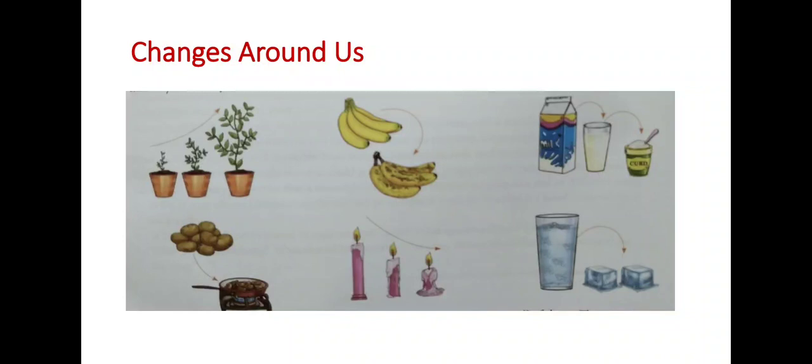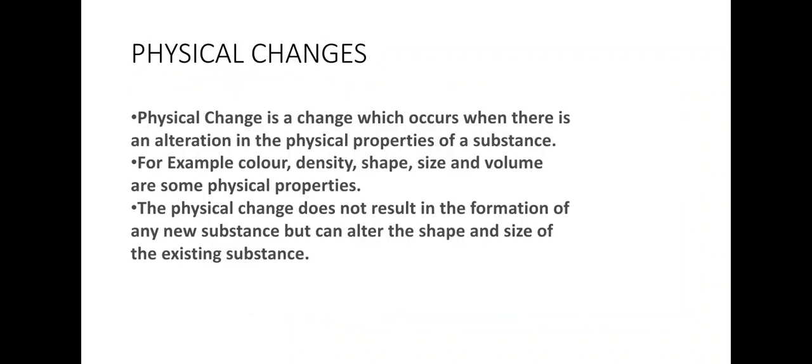In this chapter we will be discussing about physical and chemical changes. What are physical changes? Physical change is a change which occurs when there is an alteration in the physical properties of a substance, for example...